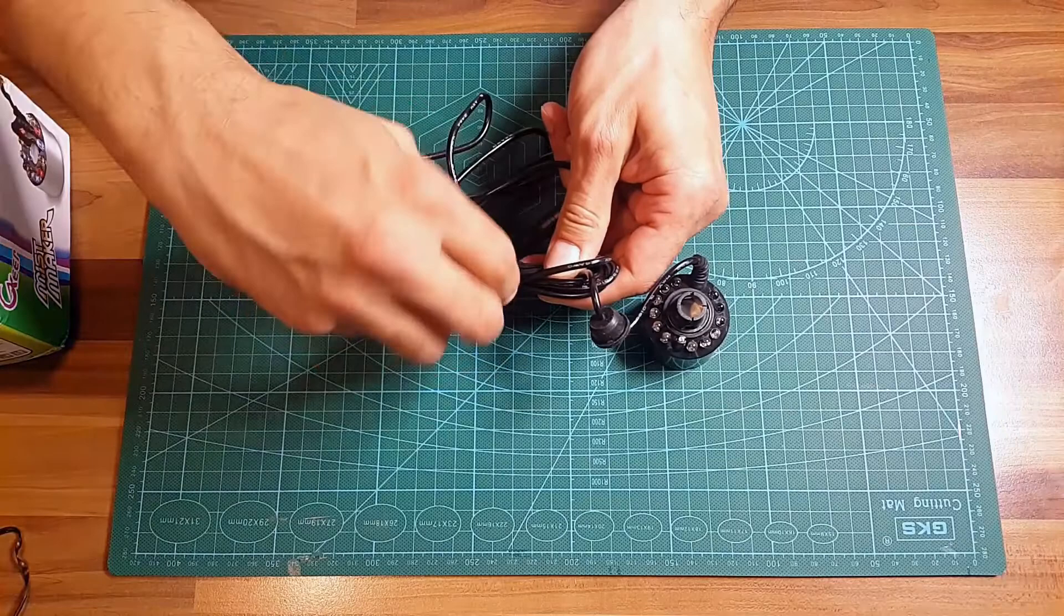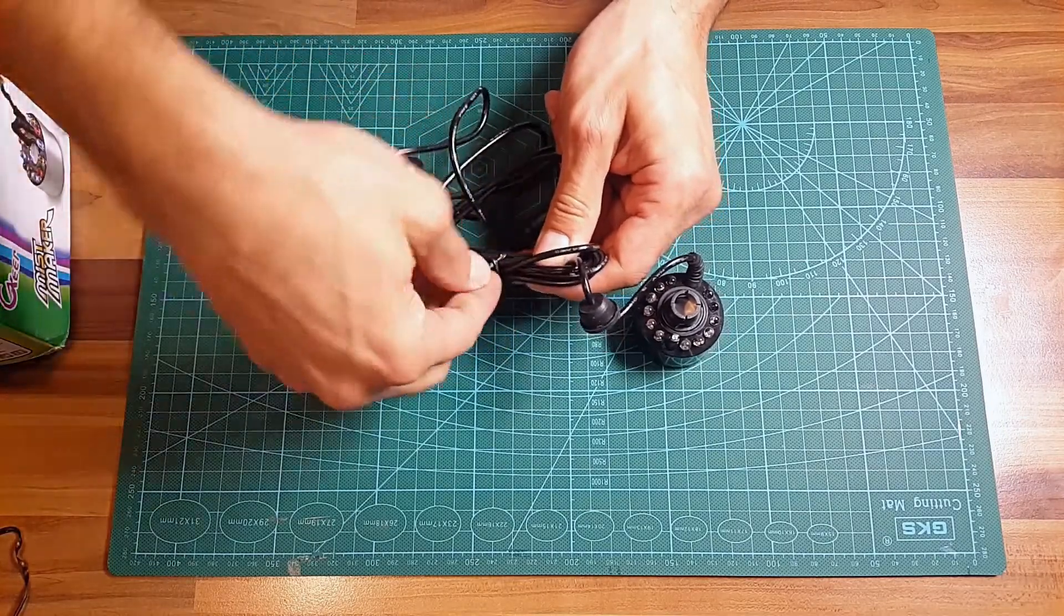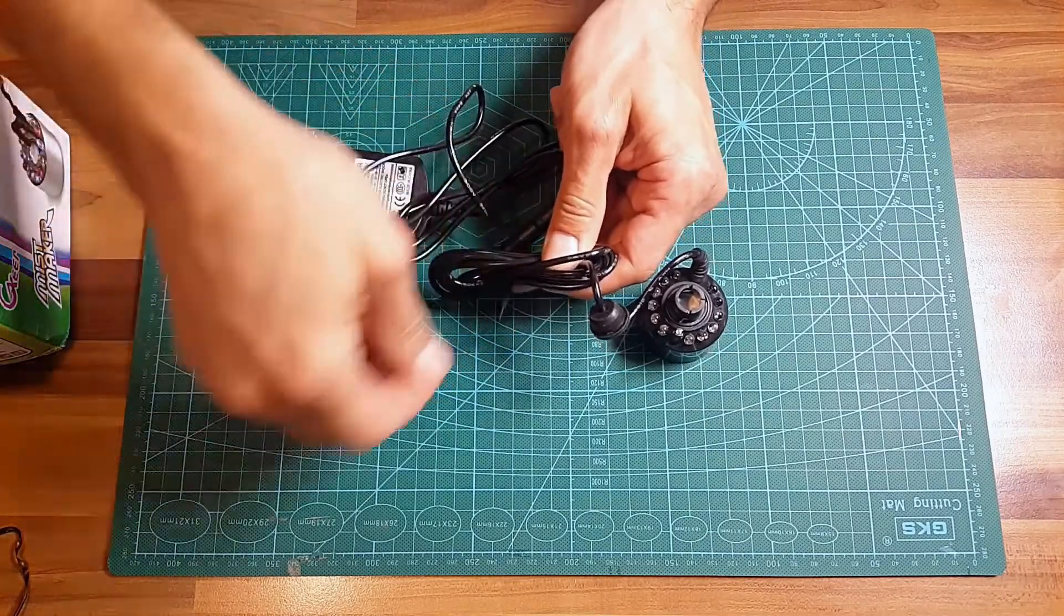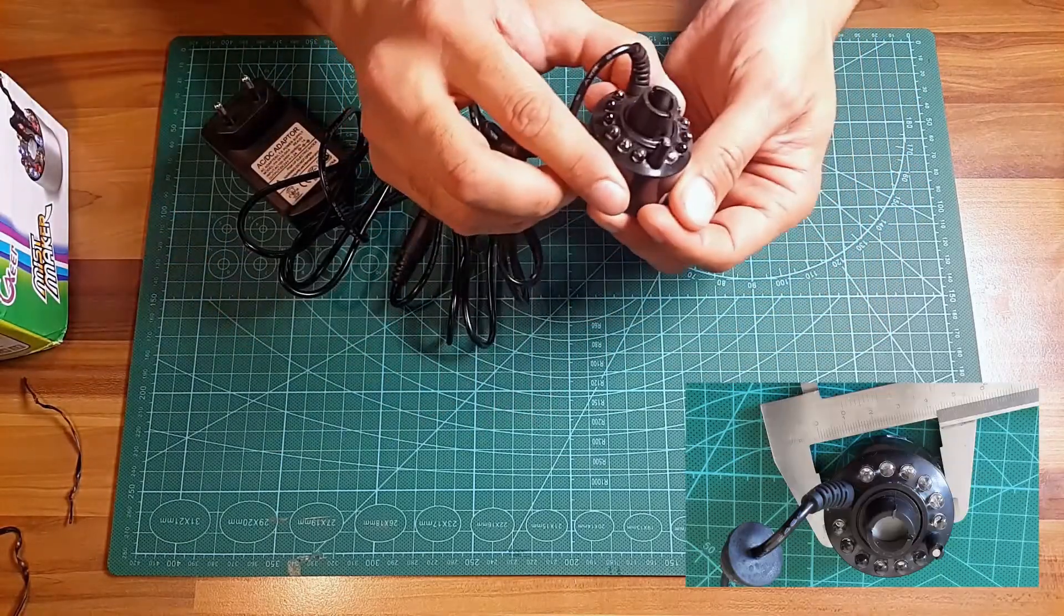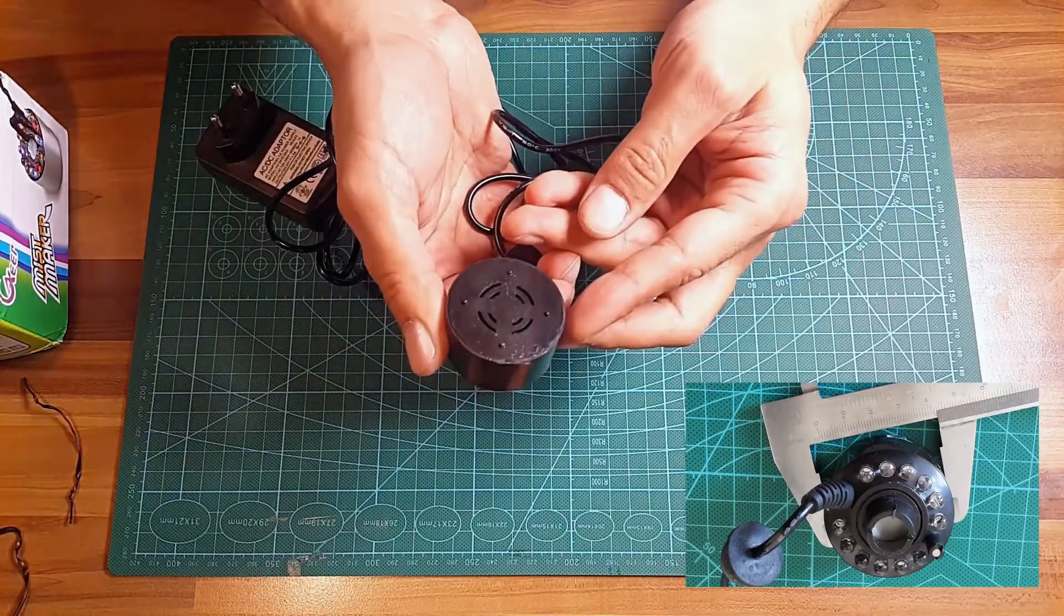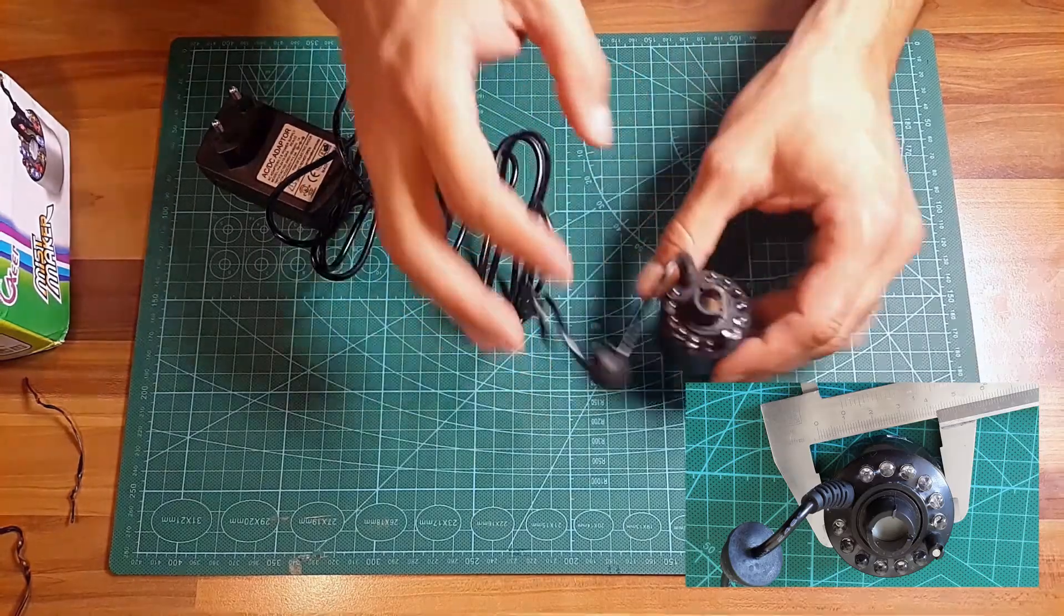As you can see, there is a round actuator with several color LEDs. I'll loosen the cables. The cable length seems to be long enough. Actuator diameter is a bit less than 5 centimeters or 2 inches.